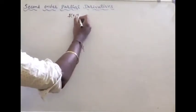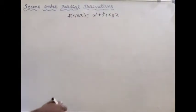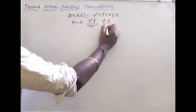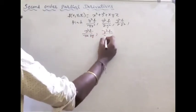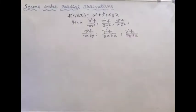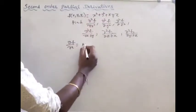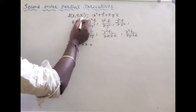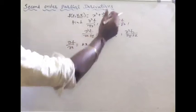Suppose the function f(x, y, z) = x square plus y square plus xyz. Here we have three variables. Find: dou square f by dou x square, dou square f by dou y square, dou square f by dou z square, dou square f by dou x dou y, dou square f by dou z dou x, and dou square f by dou y dou z. First, with respect to x: dou f by dou x gives 2x plus yz, treating remaining variables y and z as constants.